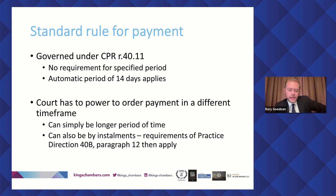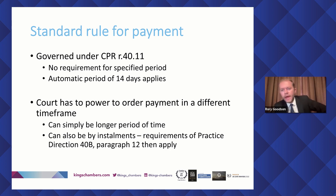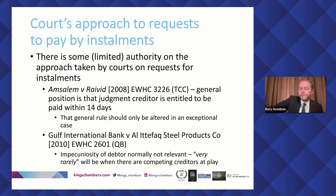I've noted there the existence of Practice Direction 40b paragraph 12. It's not of necessarily particularly high importance, but it is worth mentioning because within that it sets out exactly what an order for payment by installments has to include. It's the things that you would expect: the amount of the judgment, the number of the installments, and to whom they have to be paid. It's worth pointing out that all of those elements have to be included within that order for it to be a valid one. In terms of requests to pay by installments, there is some limited authority on how the courts will deal with this question under Rule 40.11.